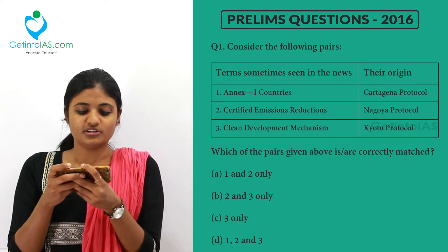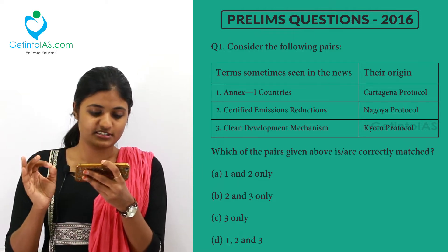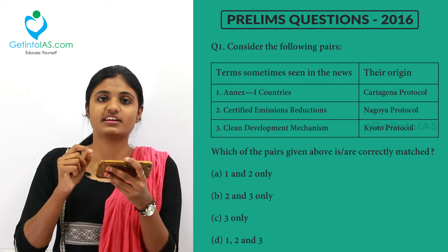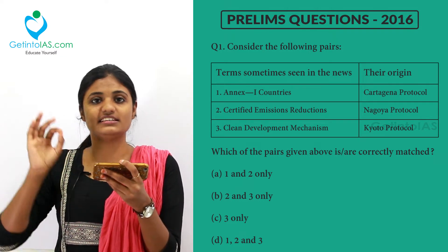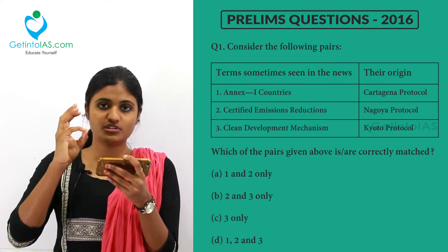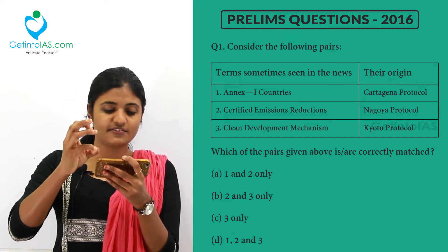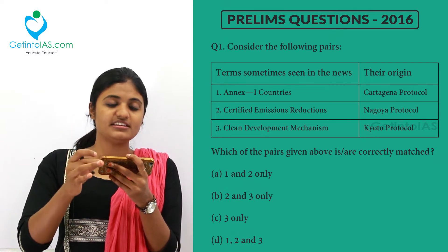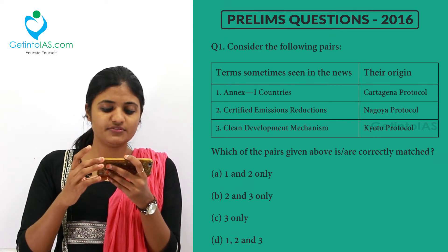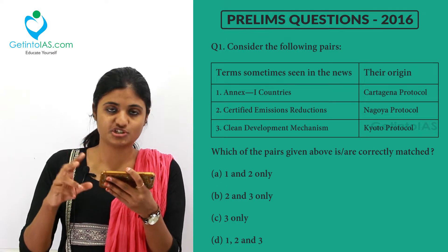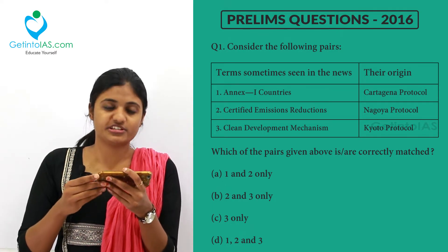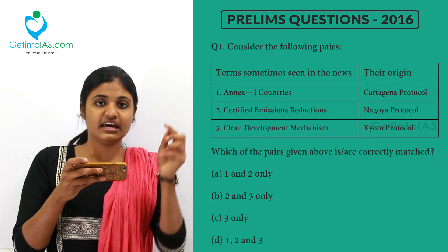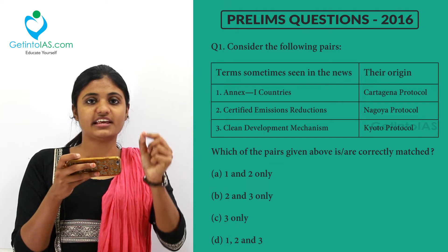Let's see about the Convention on Biological Diversity. The CBD entered into force on 29th December 1993. It has three main objectives: to conserve biodiversity, sustainable use of the components of biological diversity, and fair and equitable sharing of the benefits arising out of the utilization of genetic resources. India ratified this CBD in 1994.